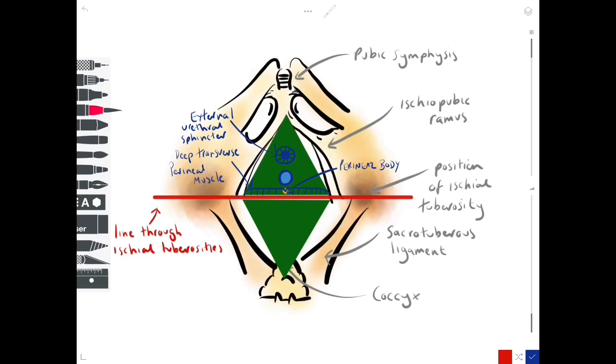We have the external urethral sphincter surrounding the urethral opening. That's exactly the same as what we'd see in the male. Let's just complete the anatomy of the anal triangle. There's the anal opening, the anal aperture, surrounded by an external anal sphincter, but now we want to focus on those structures which are unique to the female deep perineal pouch.